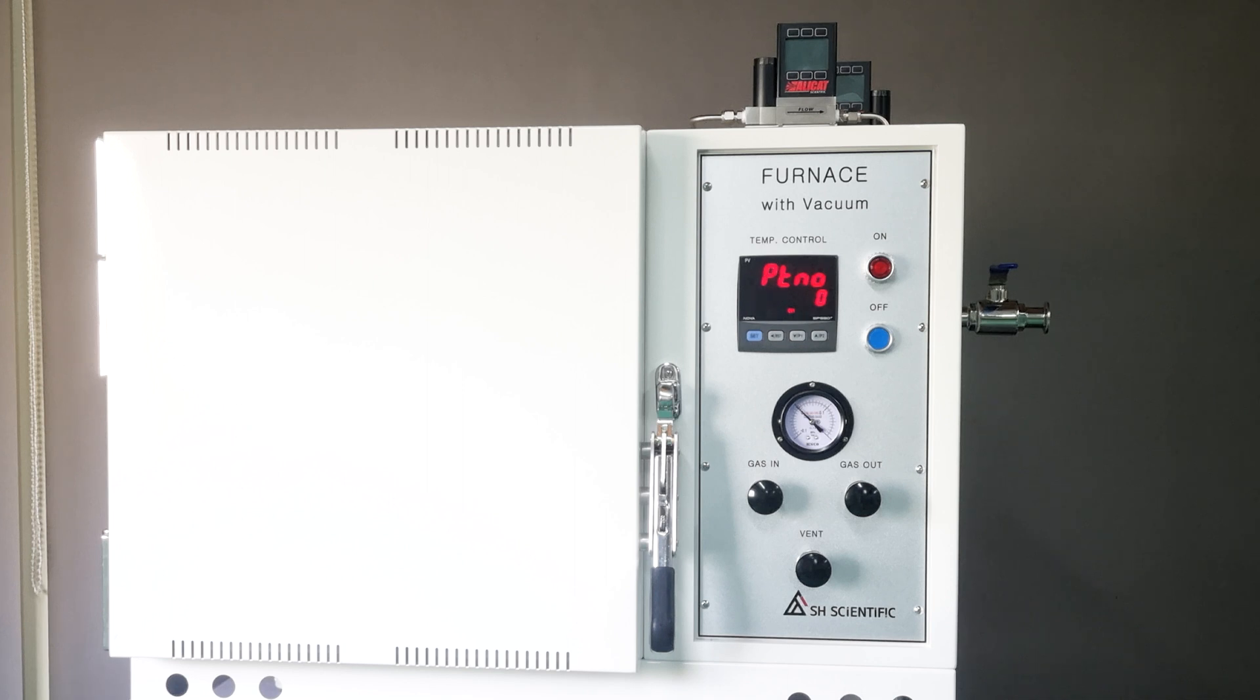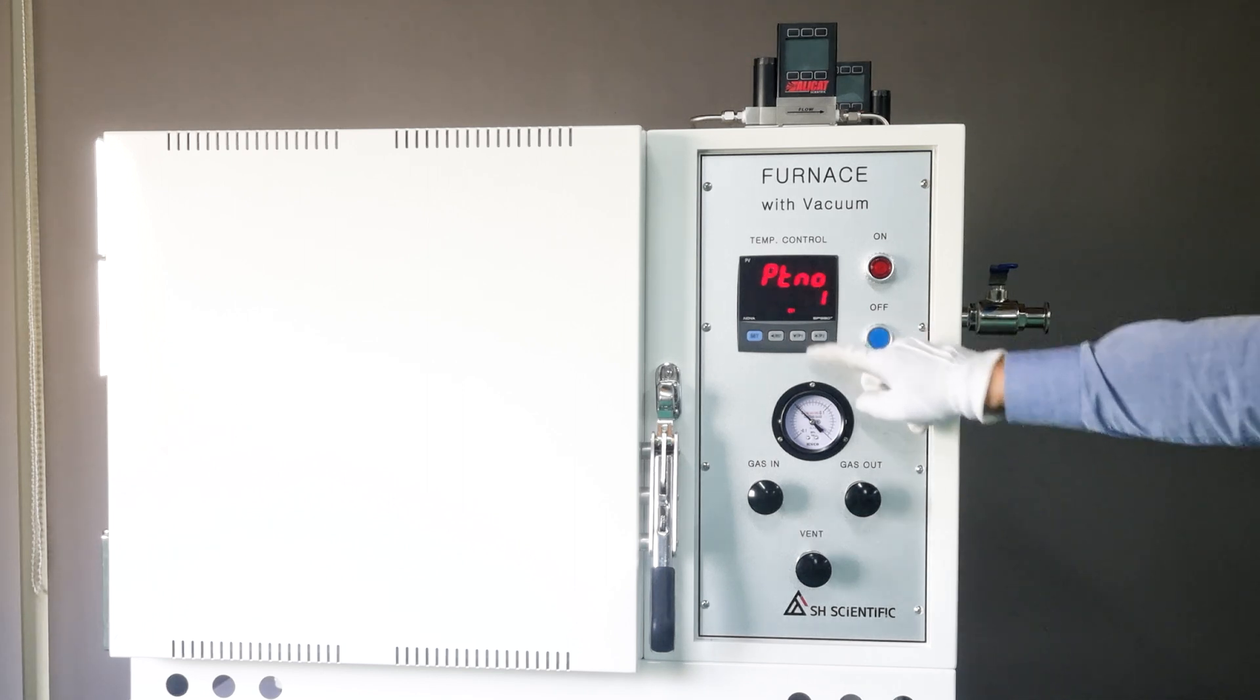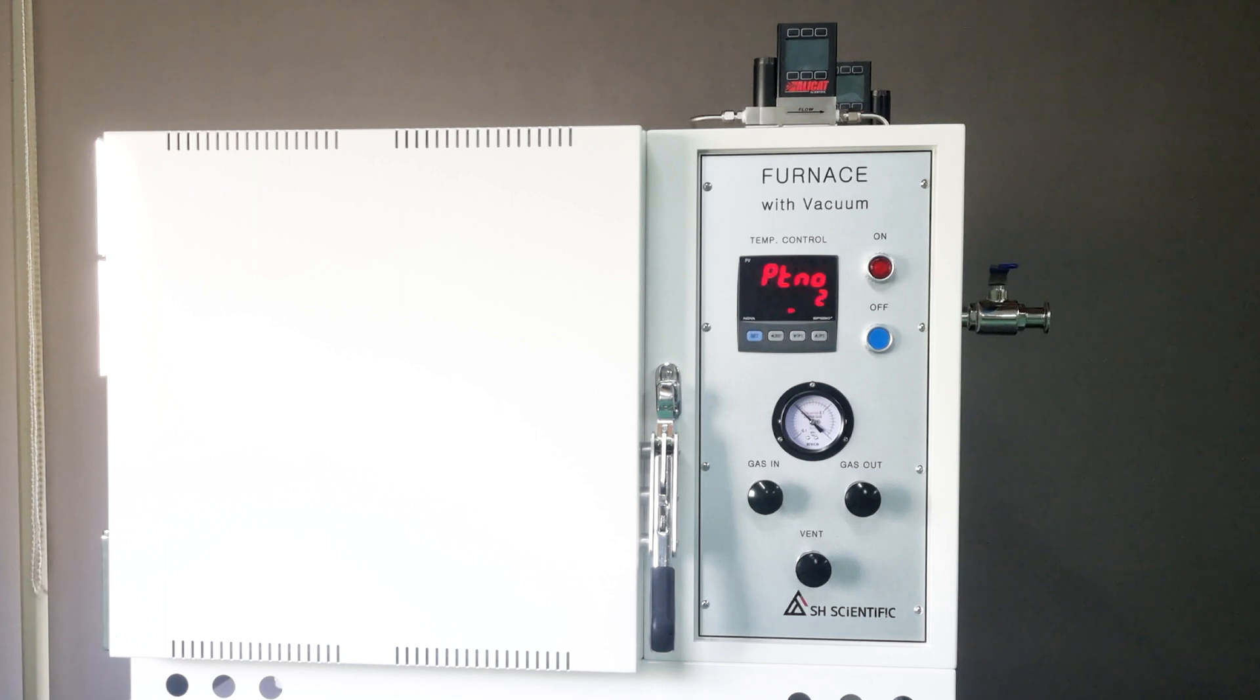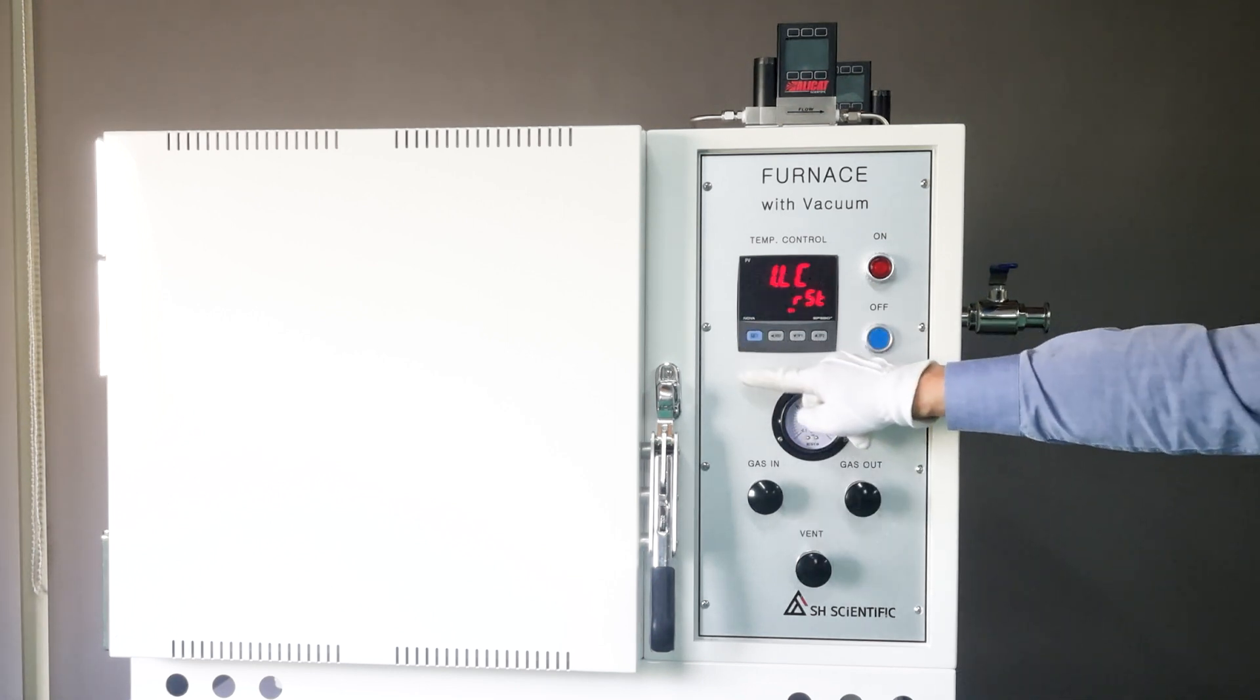Like I briefly mentioned earlier, our SP Series Controller has Pattern 1 and Pattern 2. You can set up to 15 steps apiece, for a total of 30. Input your pattern number 1, then click the set button.